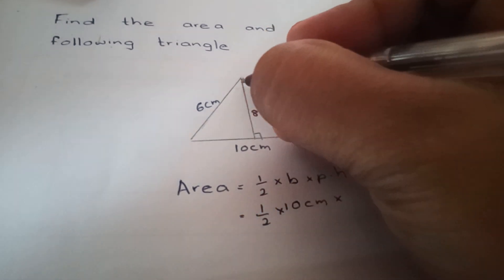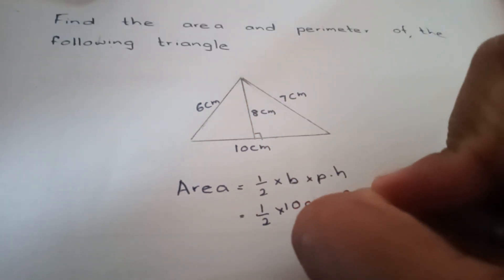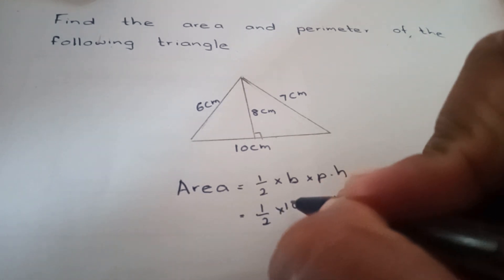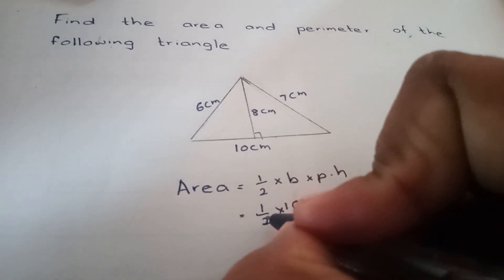The perpendicular height is 8 centimeters. We can simplify 10 and 2 - divide both by 2.